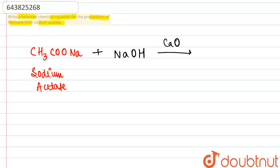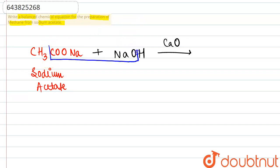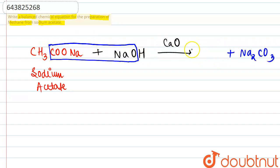This reaction happens in the presence of quicklime, calcium oxide (CaO), which is a very good dehydrating agent. What happens here is that two sodium atoms are removed — one from COONa and one from NaO — and they are eliminated as sodium carbonate (Na₂CO₃). Apart from this, CH₃ and one hydrogen come together.